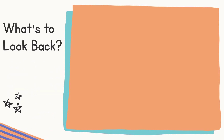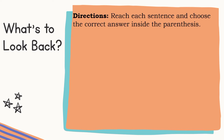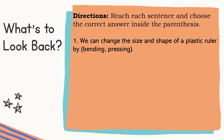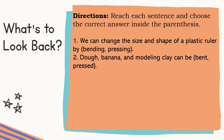Now here's a look-back activity. Get your notebook in science and answer the following. Read each sentence and choose the correct answer inside the parentheses. We can change the size and shape of a plastic ruler by bending or pressing. Clay and bonding clay can be bent or pressed.